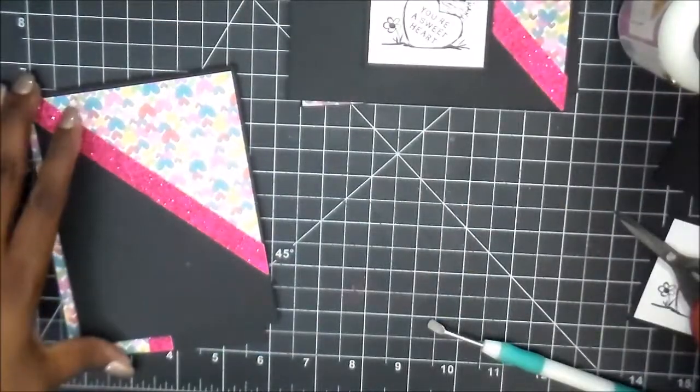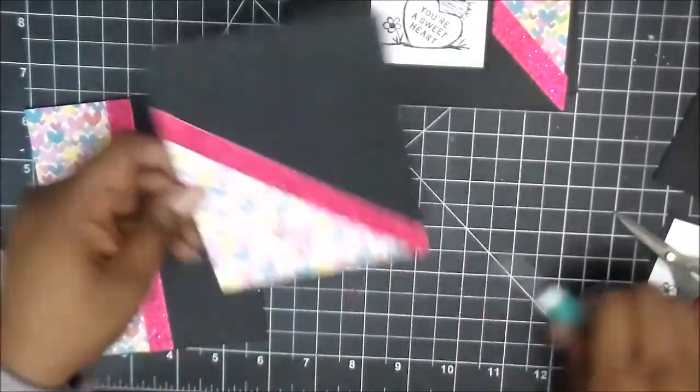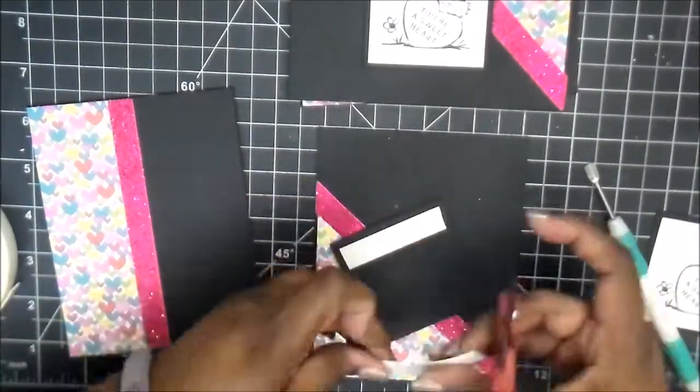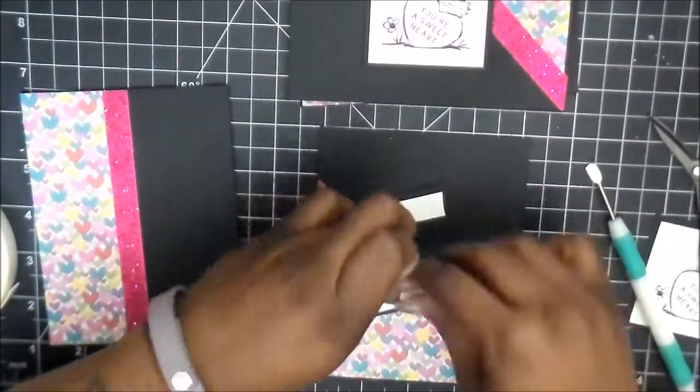And if you see any pieces that are pulling up or trying to come undone, you can always use your art glitter glue like I just did to make sure it stays down.